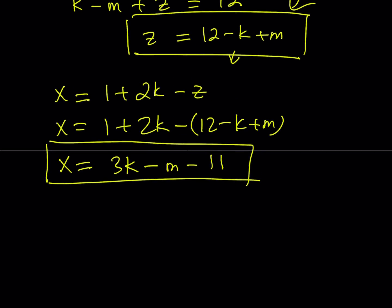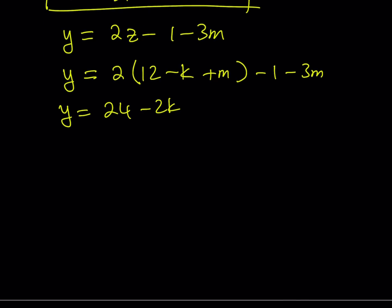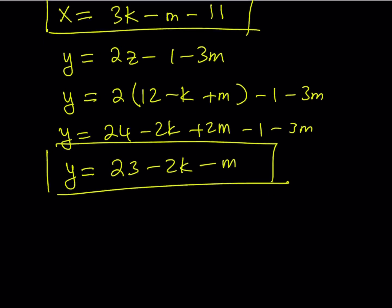Let's do the same thing for y. y is equal to 2z minus 1 minus 3m. Now I'm going to replace z with what it is: 2 times the quantity 12 minus k plus m minus 1 minus 3m. Let's simplify this: 24 minus 2k plus 2m minus 1 minus 3m. From here, y becomes 24 minus 1, which is 23, minus 2k, and 2m minus 3m is negative m. So I get 23 minus 2k minus m for y.